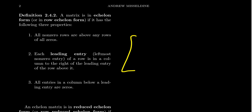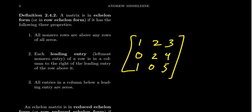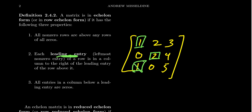One more non-example: the matrix [1, 2, 3; 0, 2, 4; 1, 0, 5]. The leading entries would be at positions (1,1), (2,2), and (3,1). This is not in echelon form because the leading entries don't always move rightward — the third row's pivot needs to be further right. There's also a problem with condition three, since there is a non-zero entry below the first pivot.